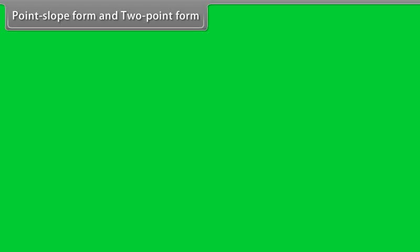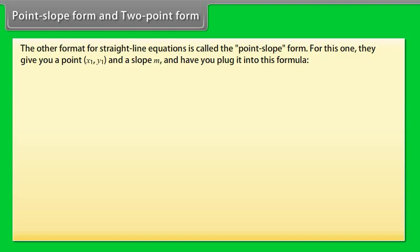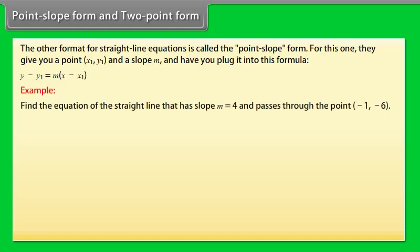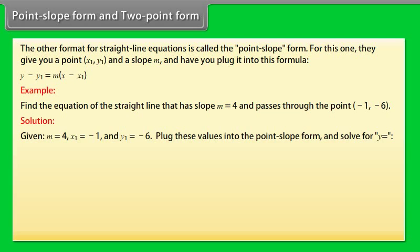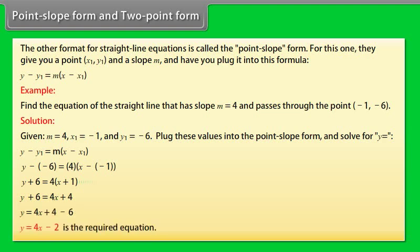Point-Slope Form and Two-Point Form: The point-slope form gives you a point (X1, Y1) and a slope M, and you plug it into the formula Y − Y1 = M(X − X1). Example: Find the equation of the straight line that has slope M = 4 and passes through the point (−1, −6). Given M = 4, X1 = −1, Y1 = −6. Substituting into the point-slope form and solving for Y, we get Y = 4X − 2, which is the required equation.